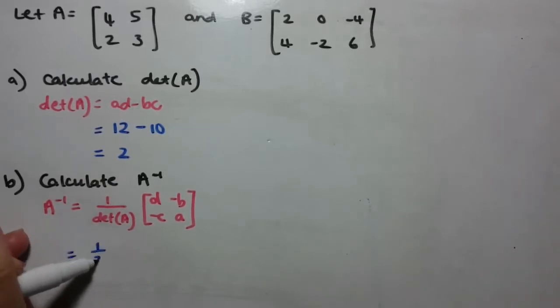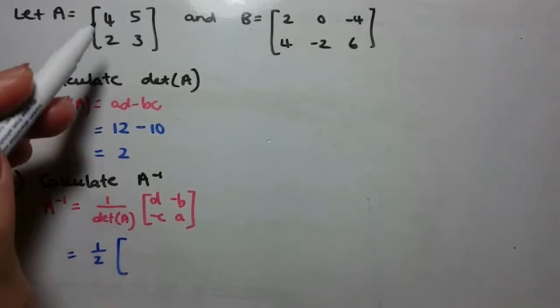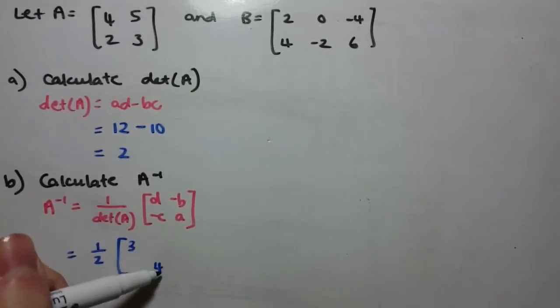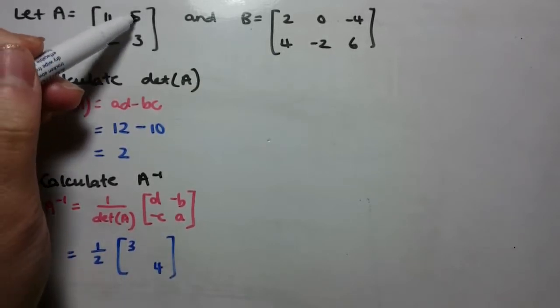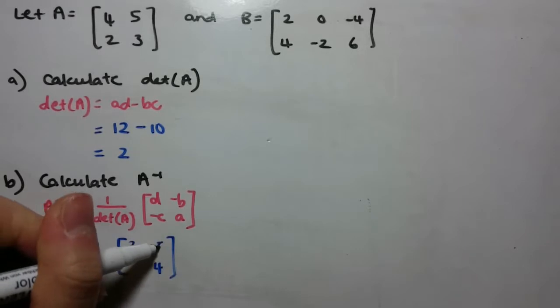So what we've got here is 1 on 2 times, swap your A and your D, you get 3 and 4, and then make these ones negative, or change the sign of those ones.